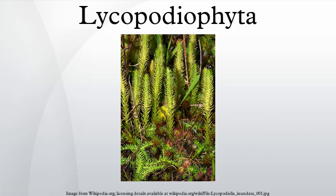The Silurian species Baragwanathia longifolia represents the earliest identifiable Lycopodiophyta, while some Cooksonia seem to be related. Lycopolica is another Silurian genus which appears to be an early member of this group. Fossils ascribed to the Lycopodiophyta first appear in the Silurian period, along with a number of other vascular plants. Phylogenetic analysis places them at the base of the vascular plants, distinguished by their microphylls and by transverse dehiscence of their sporangia.